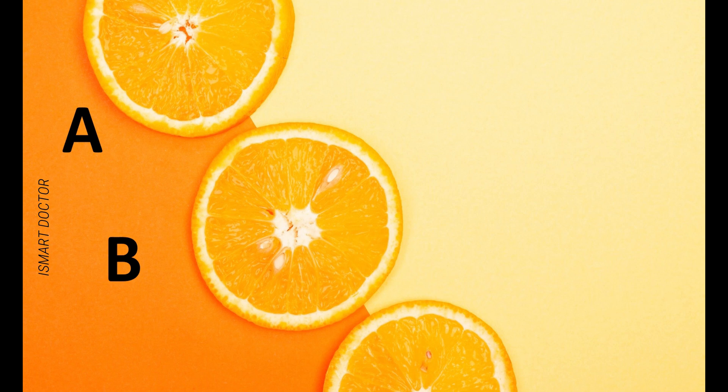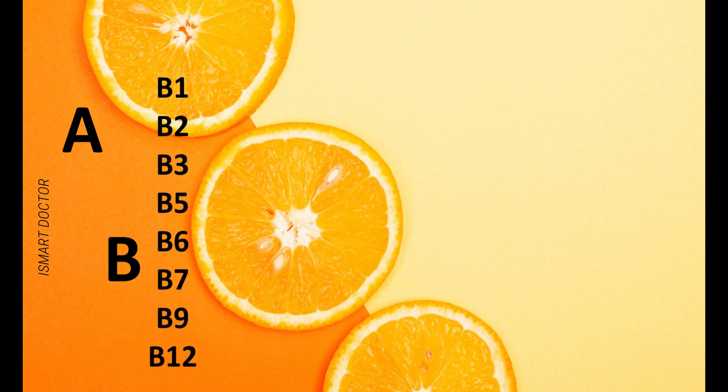Vitamin B complex includes: B1, B2, B3, B5, B6, B7, B9, and B12. These are the members of the B complex group.